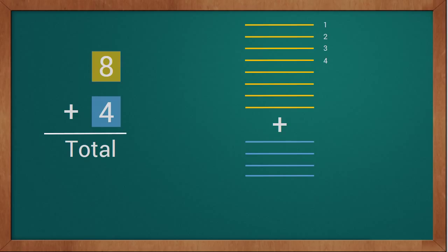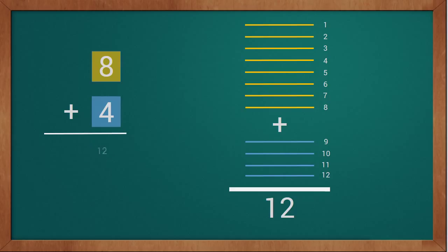1, 2, 3, 4, 5, 6, 7, 8, 9, 10, 11, and 12. This way we got a total of 12 sticks, so our total is 12. Our answer is 12. 8 plus 4 equals 12. This way, with the help of sticks, we learn basic addition.